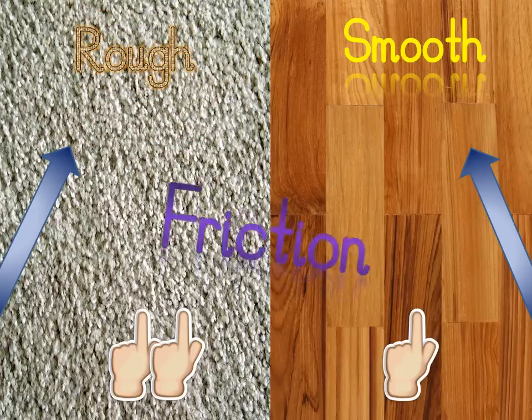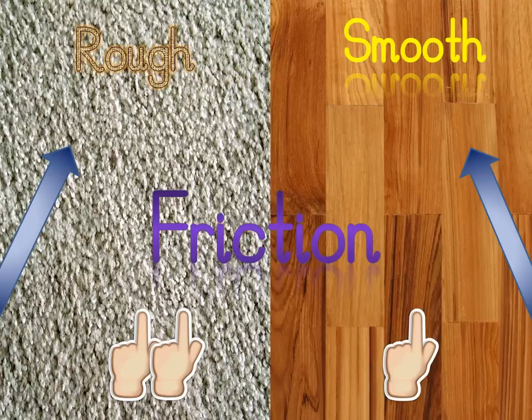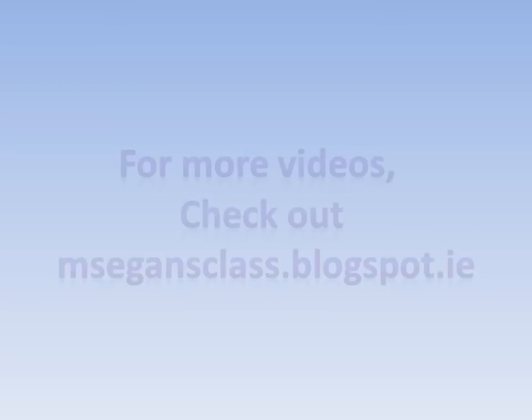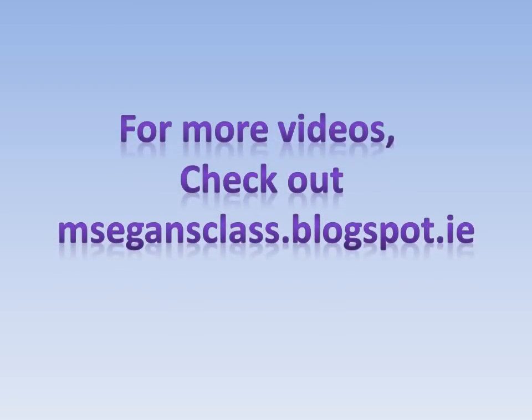This is because of friction. Friction is the force where things rub against each other. Friction is very important — without friction, we would have no grip. Friction helps us not to slip when we walk.